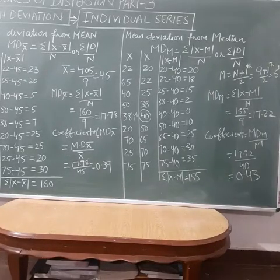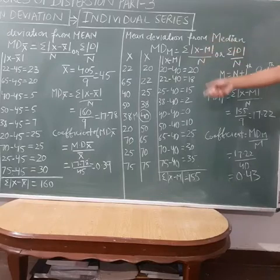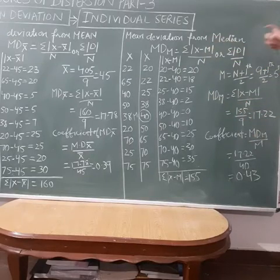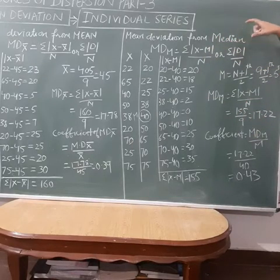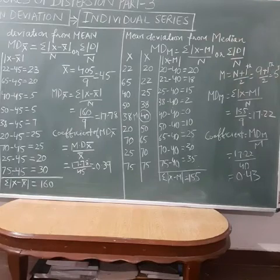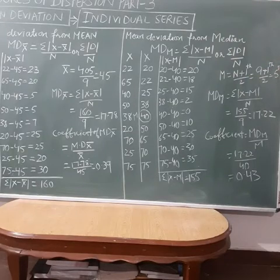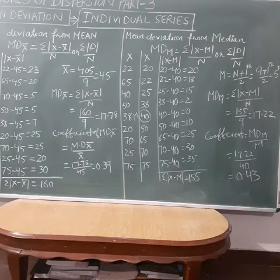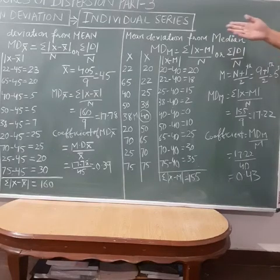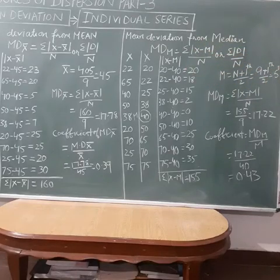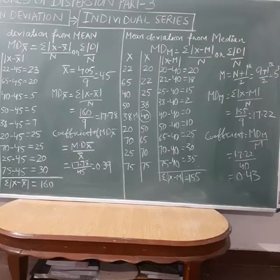Now we will solve the same statement — mean deviation from median. The first numerical we solved was mean deviation from mean. Now I am going to solve the same statement by mean deviation from median. The data is: x is 22, 65, 40, 50, 38, 20, 70, 25, and 75.